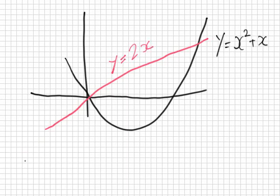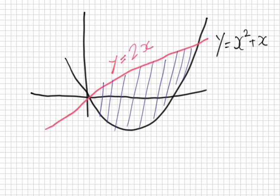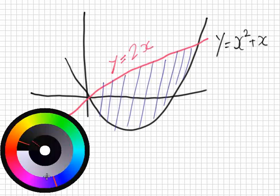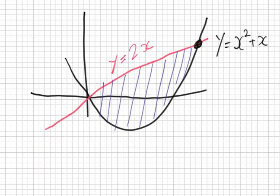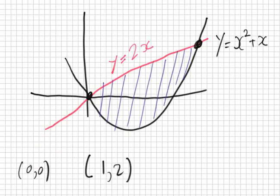We've got a line and a quadratic and I would like this area between them. The first thing you have to do is find where they meet. That intersection point at the origin is zero, zero. You solve one linear and one quadratic simultaneously — I won't show how, but the answers are the points zero and (1, 2).